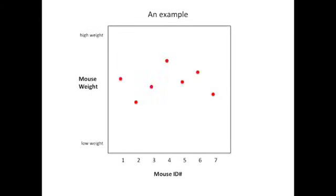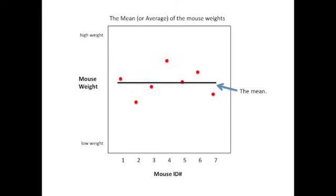Let's start with an example. Here we're plotting mouse weight on the y-axis with high weights towards the top and low weights towards the bottom, and mouse identification numbers on the x-axis with ID numbers 1 through 7. We can calculate the mean, or average, of the mouse weights and plot it as a line that spans the graph.